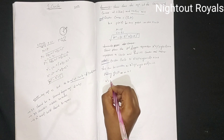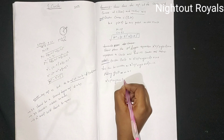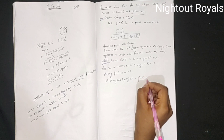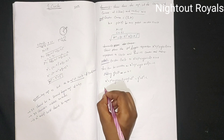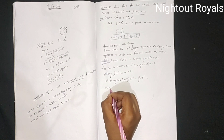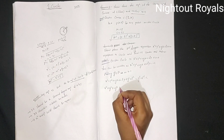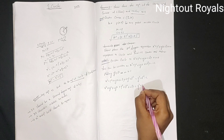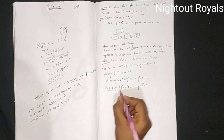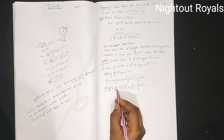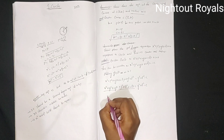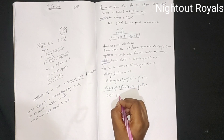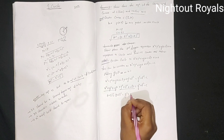Adding g² and f² to both sides: x² + 2gx + g² + y² + 2fy + f² = g² + f² - c. Using the formula a² + 2ab + b² = (a + b)², this becomes (x + g)² + (y + f)² = g² + f² - c.